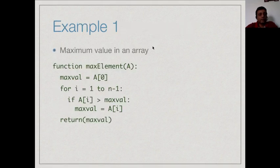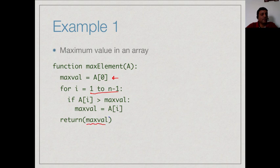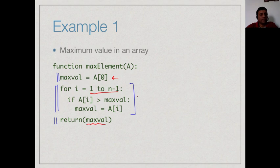Our first example is a very standard problem: finding the maximum element in an array A. We initially assume the maximum value is the first value, then scan the rest of the array. Wherever we see a value bigger than the current maximum value maxval, we replace it, and at the end return maxval. We have three phases: initialization, a loop, and a return. Since we look at the bottleneck phase, and the order of f1 plus f2 is the max of their orders, it is clear the loop dominates.